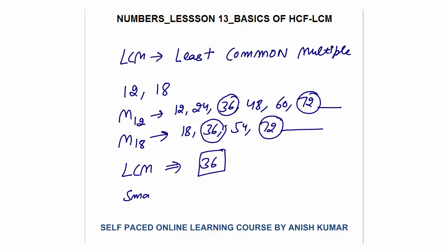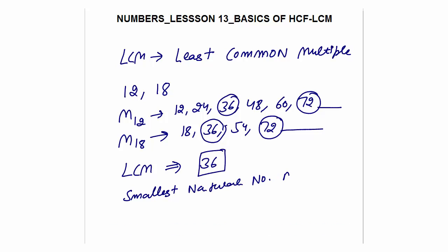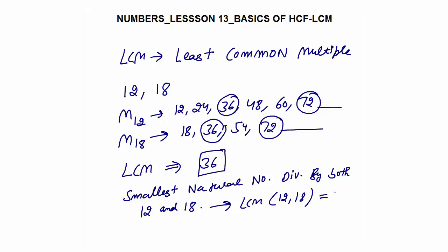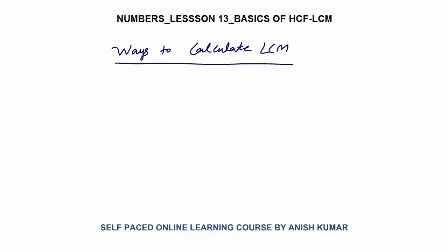The simple way to understand LCM is that it is the smallest natural number divisible by both 12 and 18. The smallest natural number that is completely divisible by both 12 and 18 is the LCM, and we know that the answer is 36. Next, we look at the ways to calculate LCM.